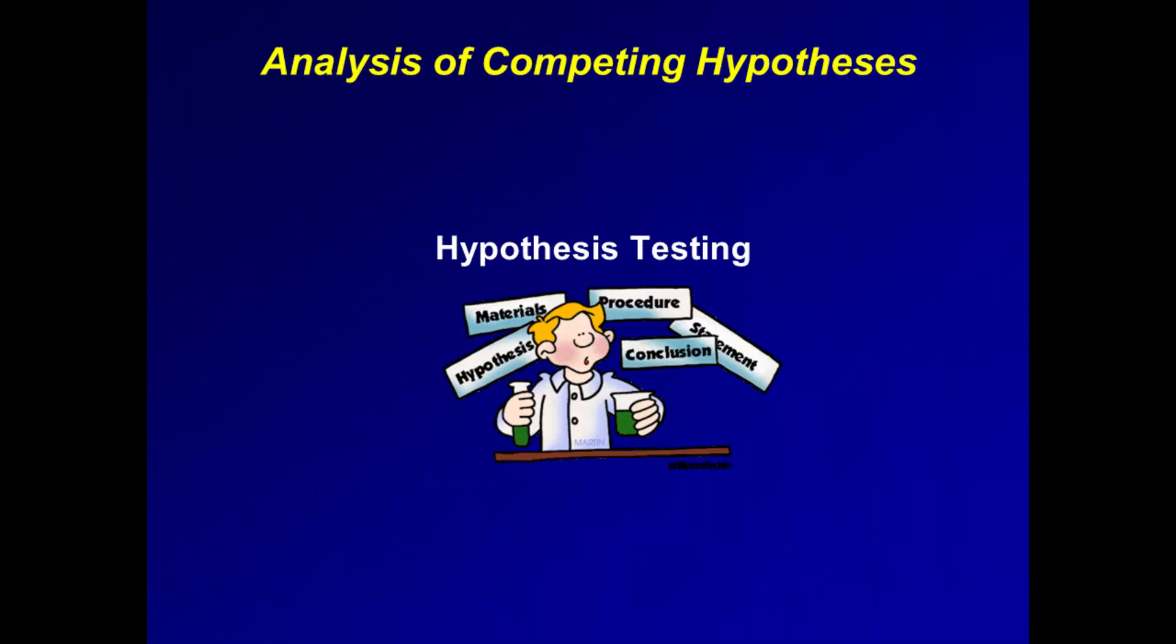ACH requires the analyst to start with a comprehensive and mutually exclusive set of hypotheses. However, this standard can often be met by starting with an initial hypothesis and generating the null hypothesis. Analysts then take each item of evidence and one at a time judge its consistency with each hypothesis. The idea is to refute hypotheses rather than confirm them. The most likely hypothesis is the one with the least evidence against it.